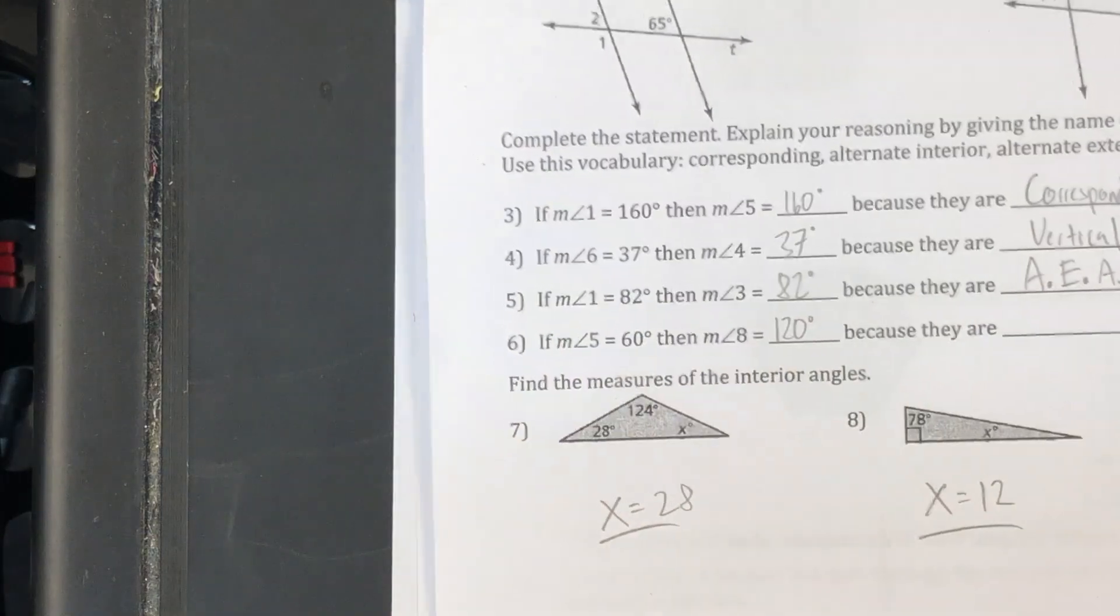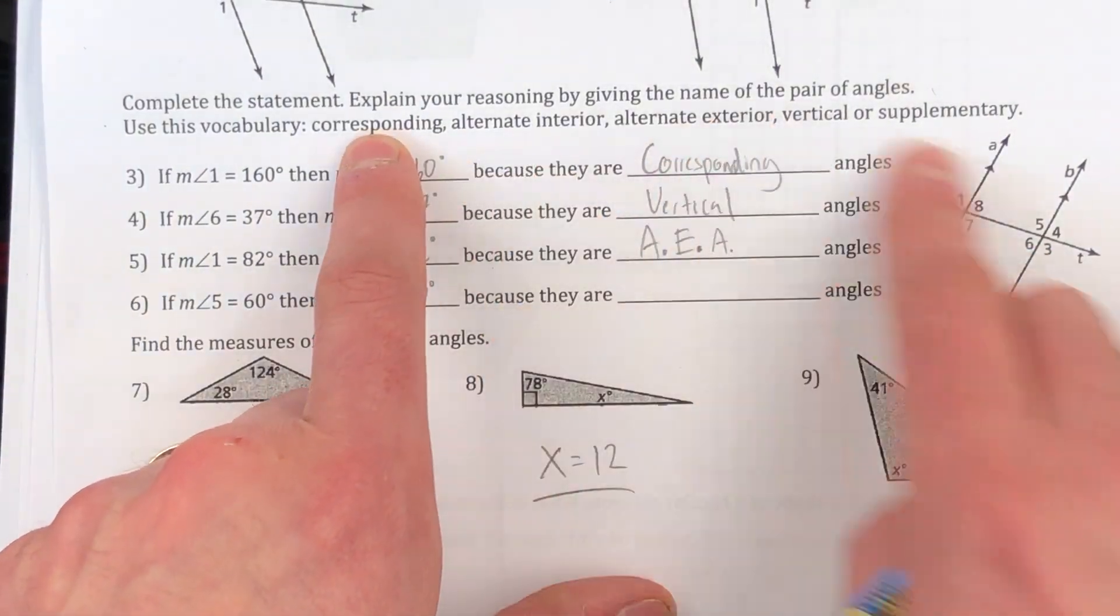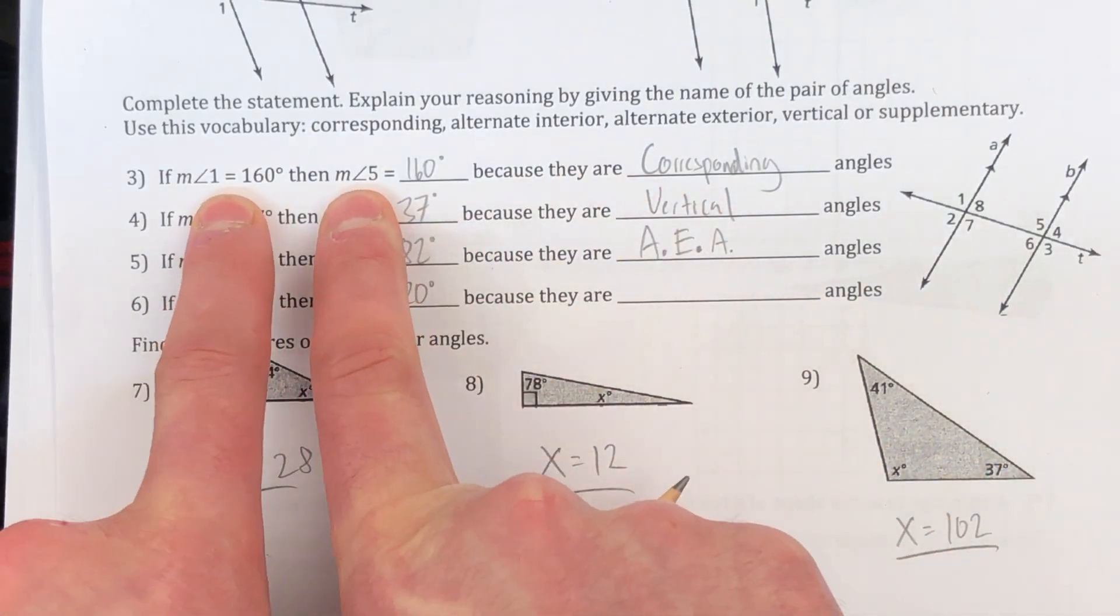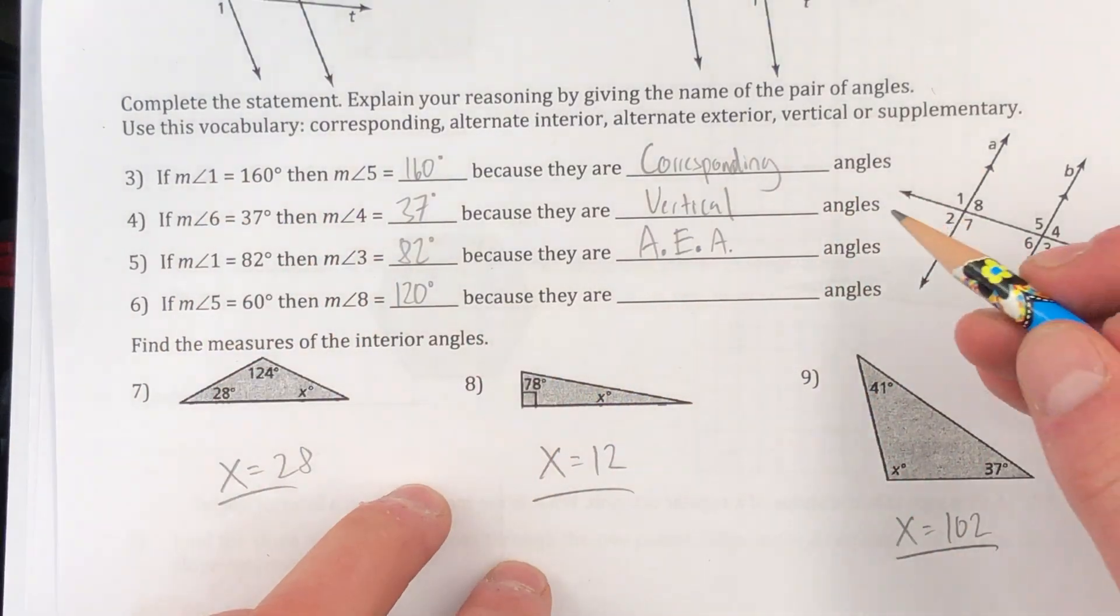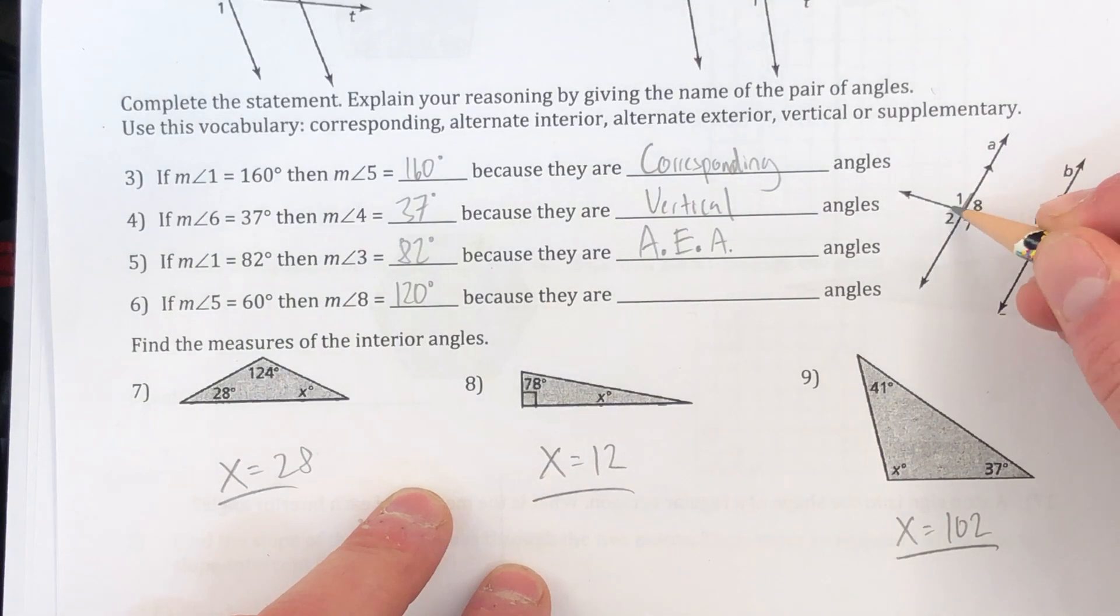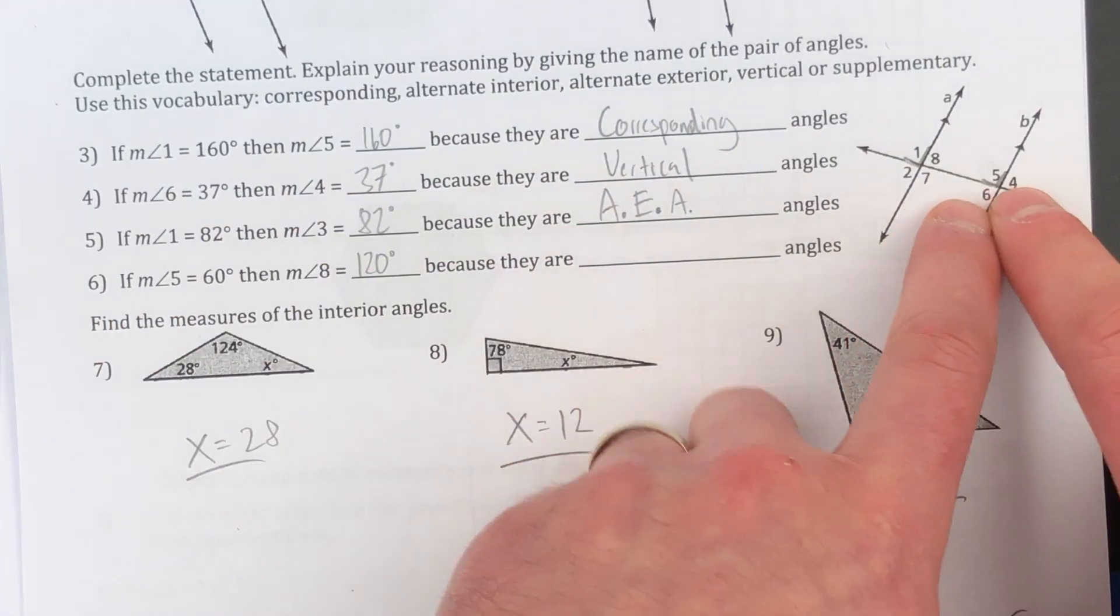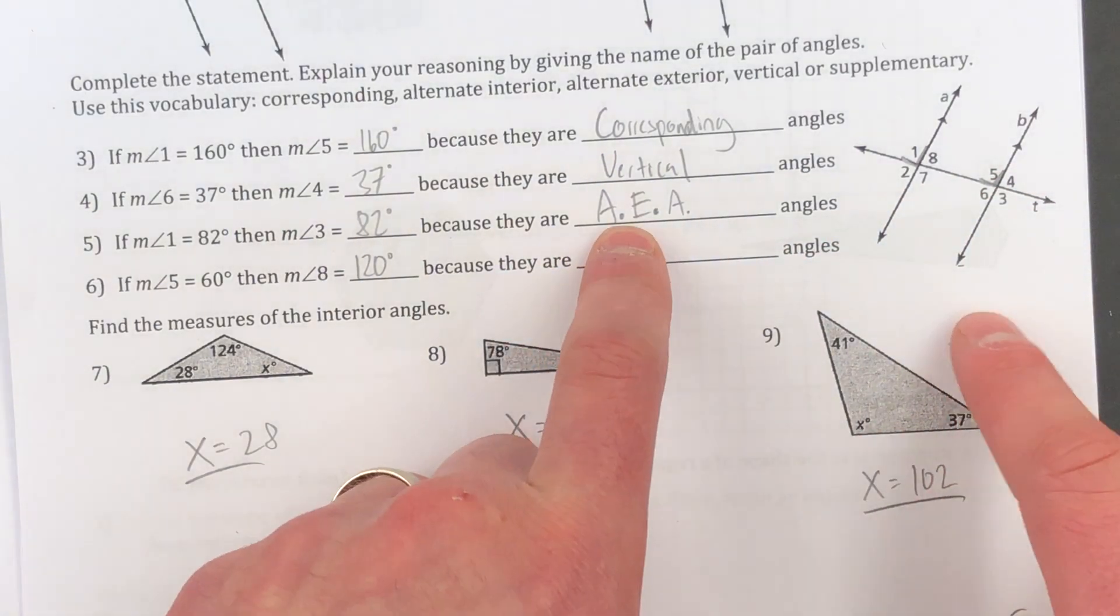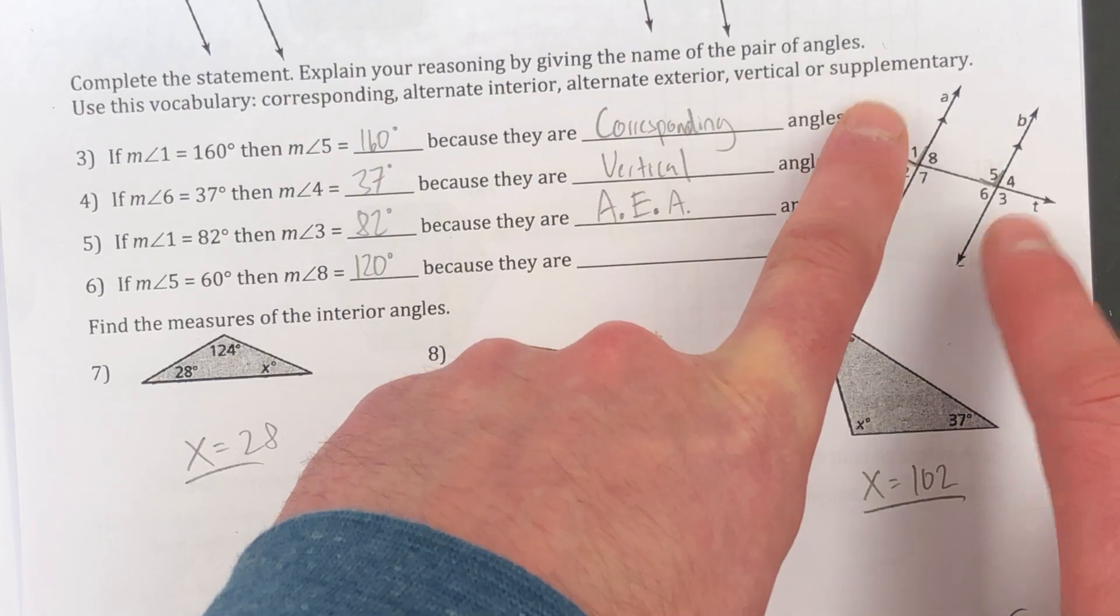Moving to the back here, parallel lines and transversals. You should definitely be familiar with these terms. And so here is three, four, and five for you. So angles 1 and 5, these are matching, corresponding angles. They're in the same kind of, in the same spot at the two different intersections. That's how we find corresponding. Vertical angles, like 6 and 4 are just right across from each other at the same intersection. And then alternate exterior angles are on the outside of the parallel lines and on opposite sides of the transversal. So we have one and three there.